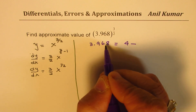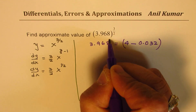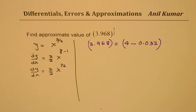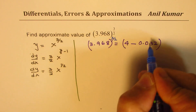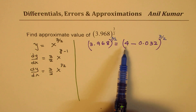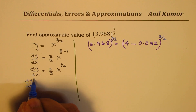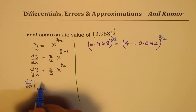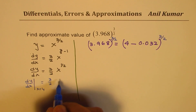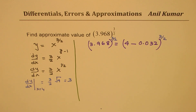So we could write this as 4 minus 0.032, this to the power of 3 over 2. In our case, we will find the rate of change at x equals to 4. So we will find what is dy/dx at x equal to 4. Substituting 4, we get 3 over 2 times square root of 4, which is equal to 3. So that is the rate of change at this particular point — dy/dx equals 3.